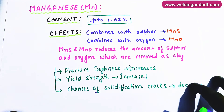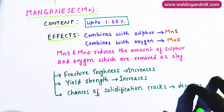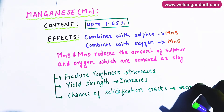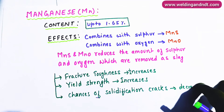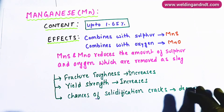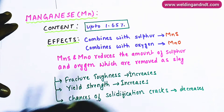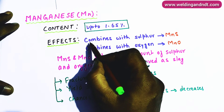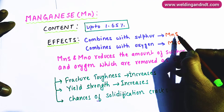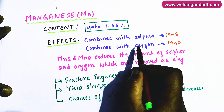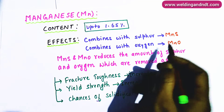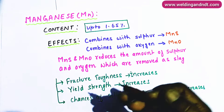After sulfur we will understand about manganese. Manganese is present up to 1.65 percent in steel. Manganese is very important because it removes the ill effects of sulfur. Manganese combines with sulfur and forms MnS, and manganese also combines with oxygen and forms MnO.